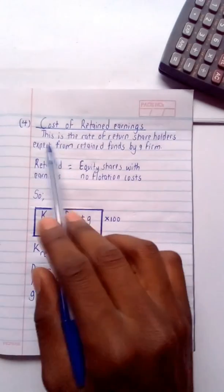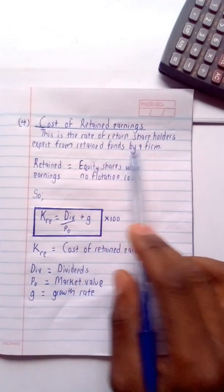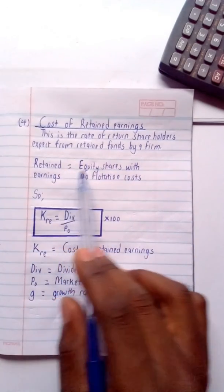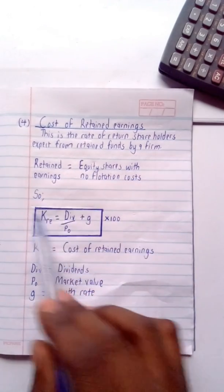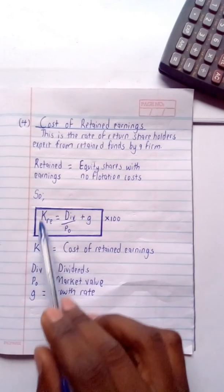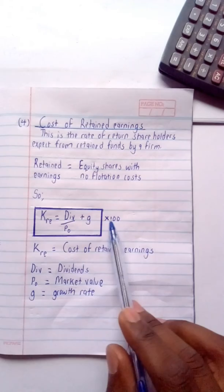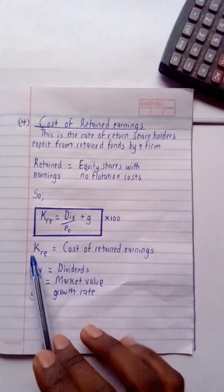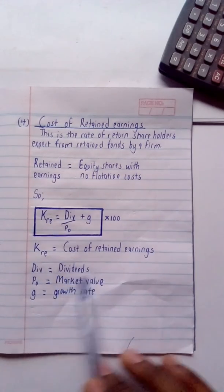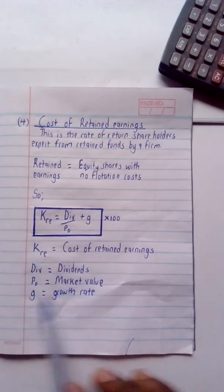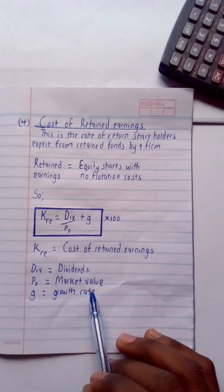The cost of retained earnings is the rate of return shareholders expect from retained funds held by a firm. Retained earnings are equivalent to equity shares with no flotation costs, so the formula is: Kr = (Div / P₀ + g) × 100, where Kr is cost of retained earnings, Div is dividends, P₀ is market value, and g is the growth rate.